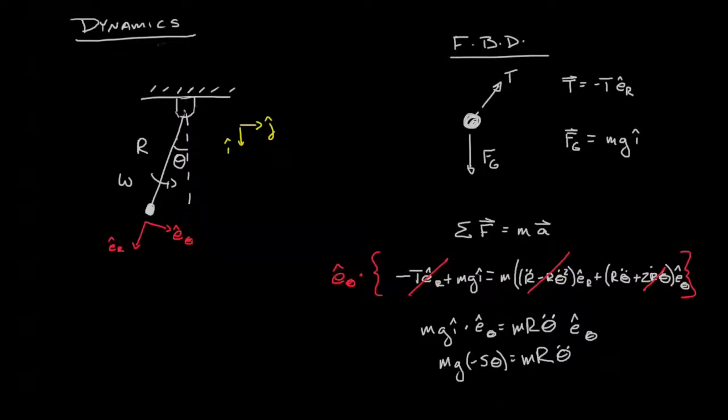We can also make an approximation that says the sine of theta is about equal to theta for small angles. This makes it easy to solve this analytically, and if we plug this in, we see that g over r theta equals theta double dot.